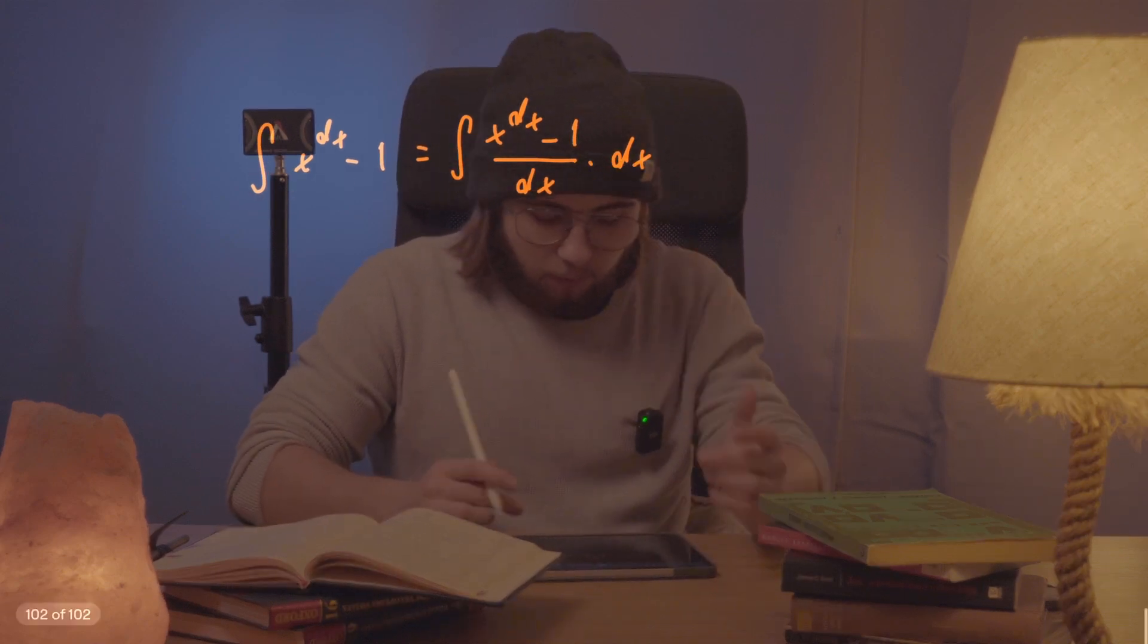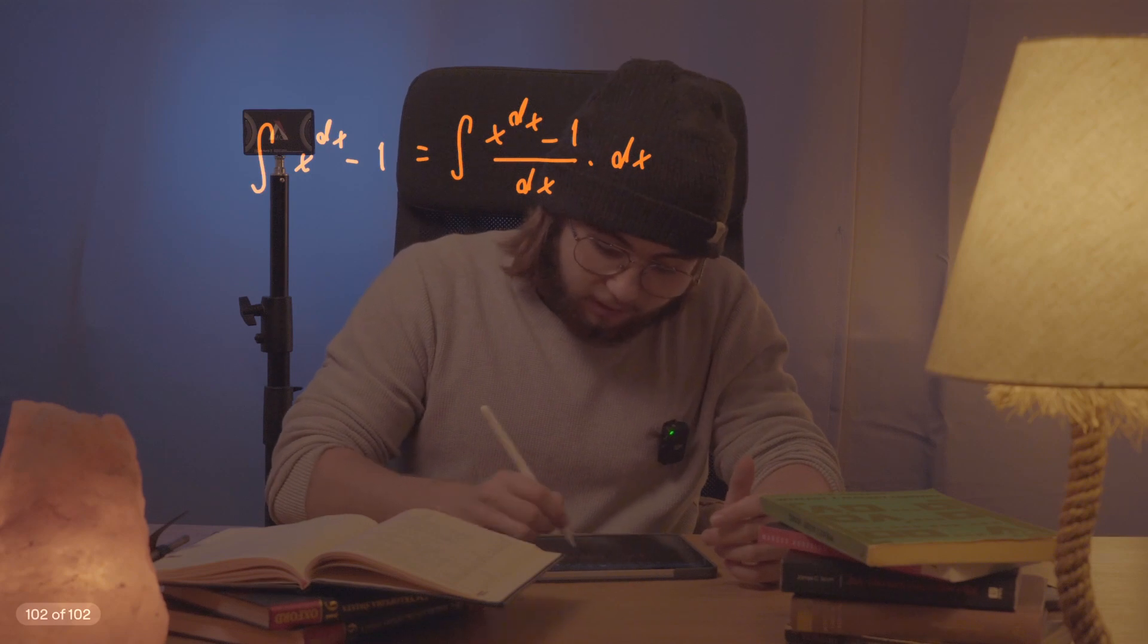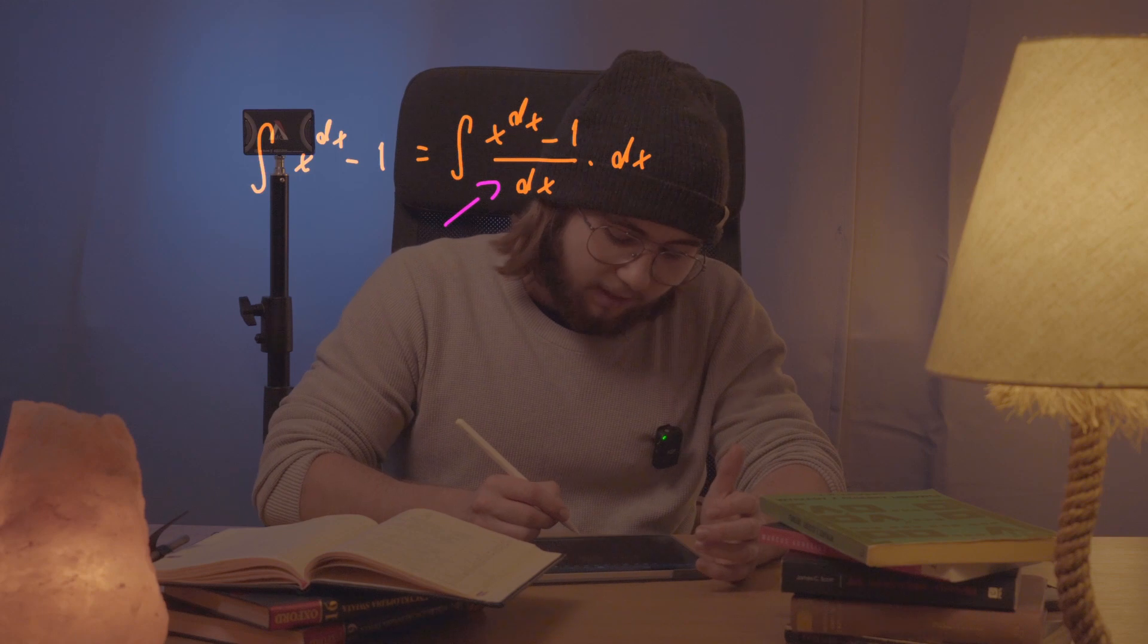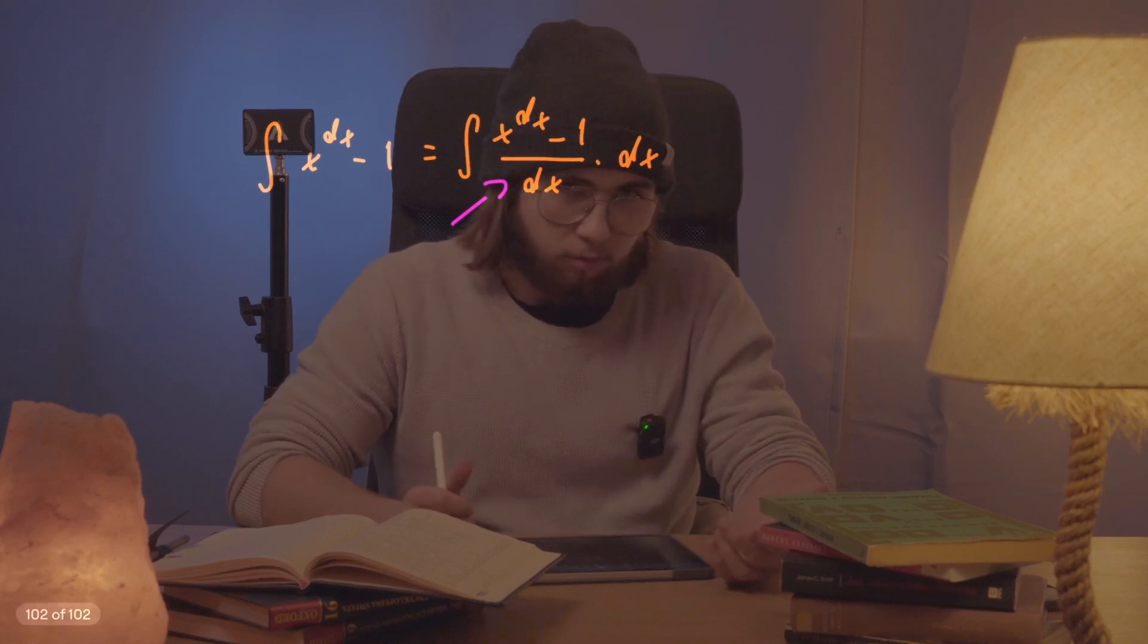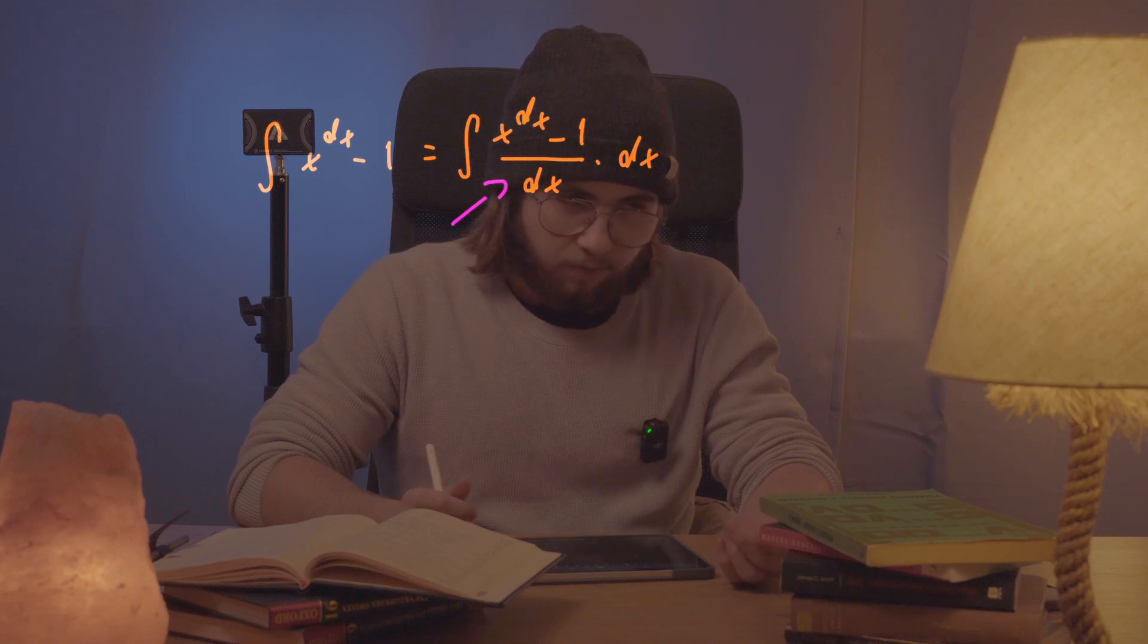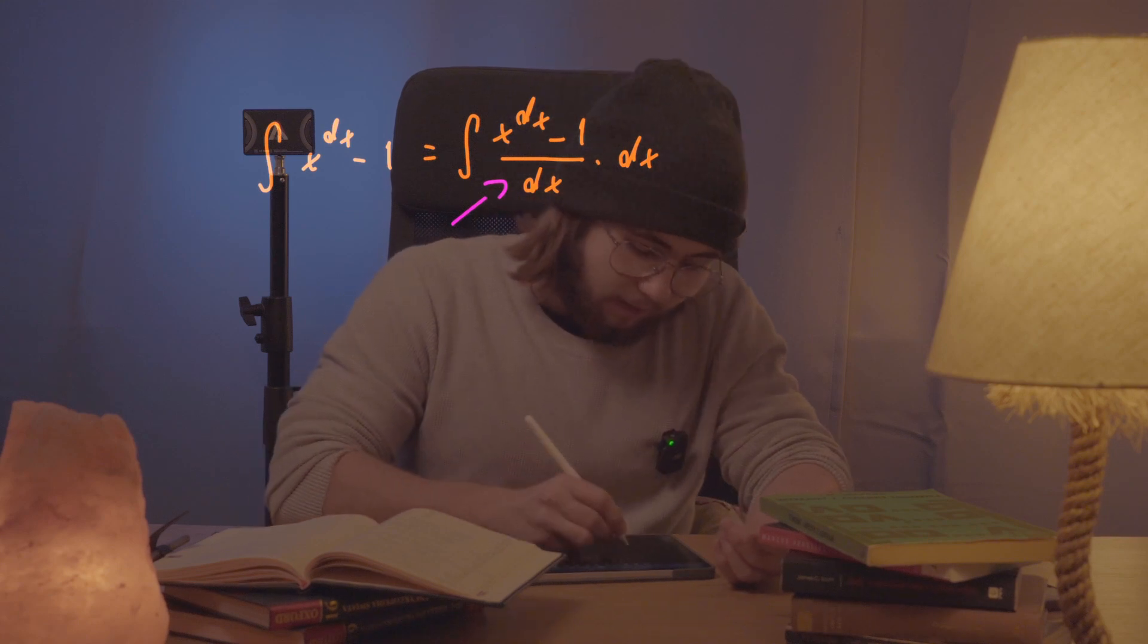And now, well, what is this stuff here inside of this integral? Well, this stuff is just x risen to the power of something that is infinitely small minus one all over something that is infinitely small. So you can just kind of go on and calculate what it is using a limit.